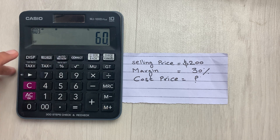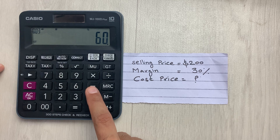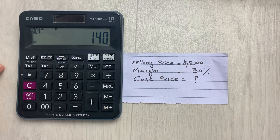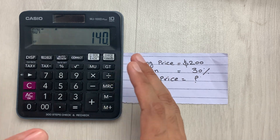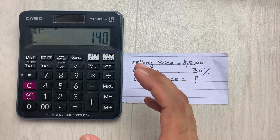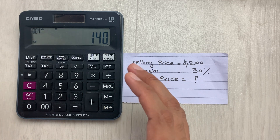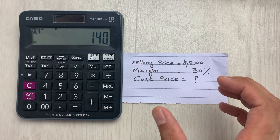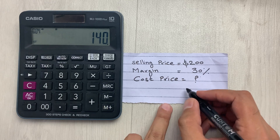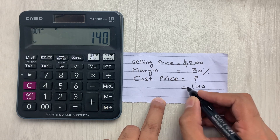I will press this percentage button and then in the last step, you have to press this minus button. Here is the final answer — 140 is the cost price for that item, so the answer will be $140.